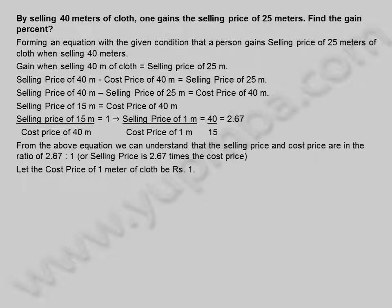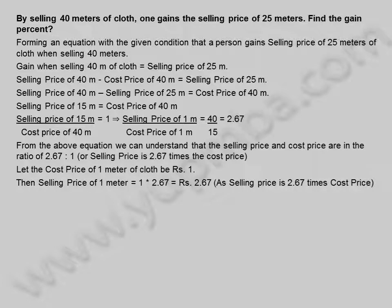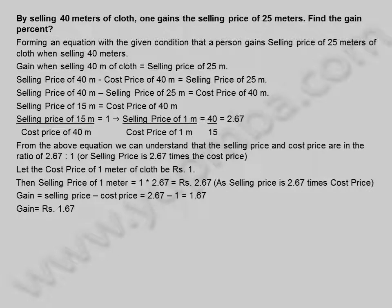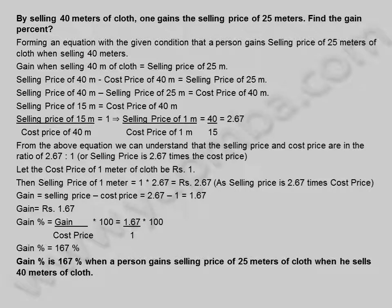Let the cost price of 1 meter of cloth be 1 rupee. Then selling price of 1 meter is equal to 1 × 2.67 = 2.67 rupees. Gain is equal to selling price minus cost price = 2.67 minus 1 = 1.67 rupees. Gain percentage is equal to gain divided by cost price into 100 = 1.67 by 1 into 100. Gain percentage is equal to 167%.